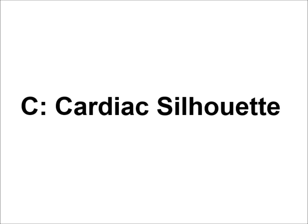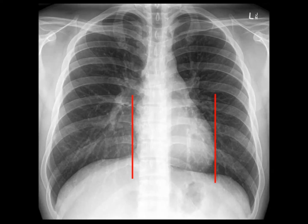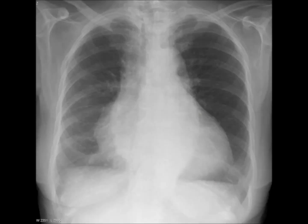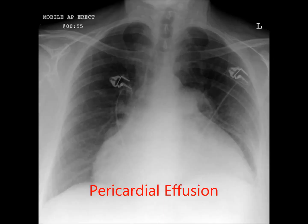C is the cardiac silhouette. On a PA film, the heart should be less than half of the chest width. An enlarged cardiac silhouette is most commonly caused by cardiomegaly. Pericardial effusion is another important cause.